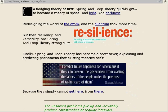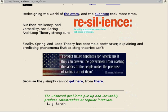Finally, spring and loop theory has become a soothsayer, explaining and predicting phenomena that existing theories can't. I predict future happiness for Americans if they can prevent the government from wasting the labors of the people under the pretense of taking care of them. Thomas Jefferson, because they simply cannot get here from there. The unsolved problems pile up and inevitably produce catastrophes at regular intervals. Luigi Barzini.